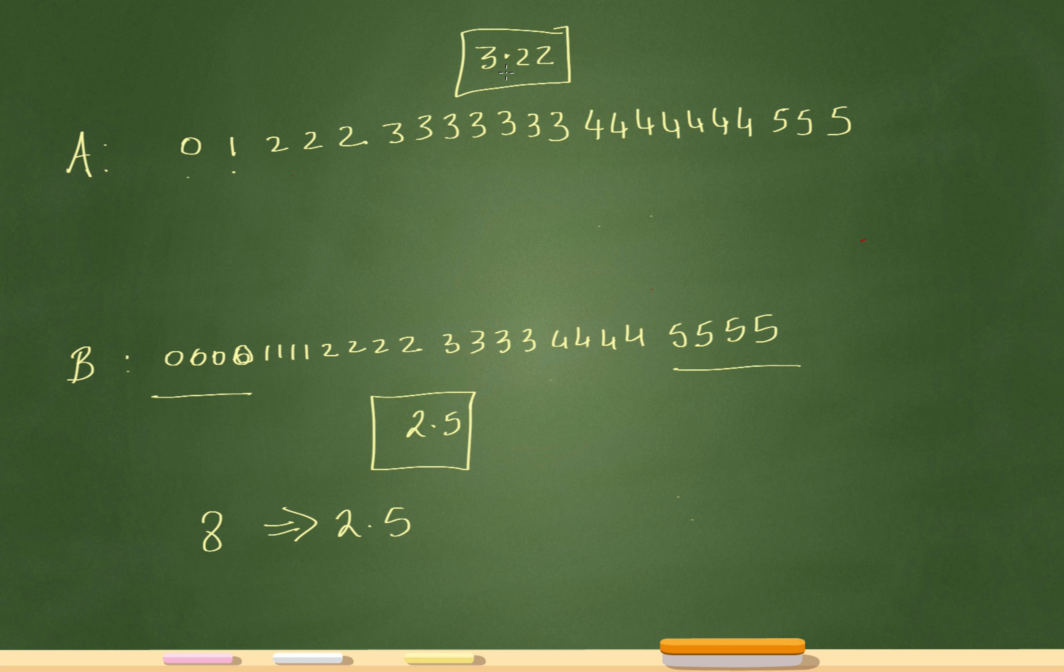But now let's check class A. These threes are only 0.22 away. These fours are only 0.78 away from the mean. These fives are about 1.78 away. These twos are about 1.22 away. This 1 is 2.22 away, and this 0 is 3.22 away.